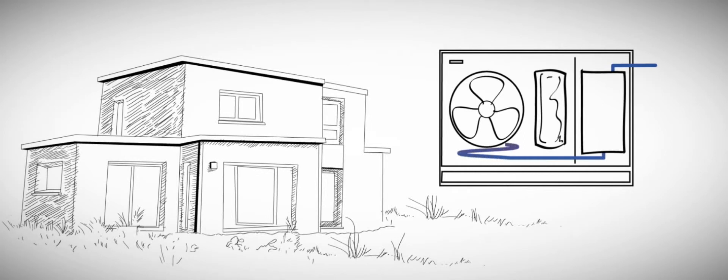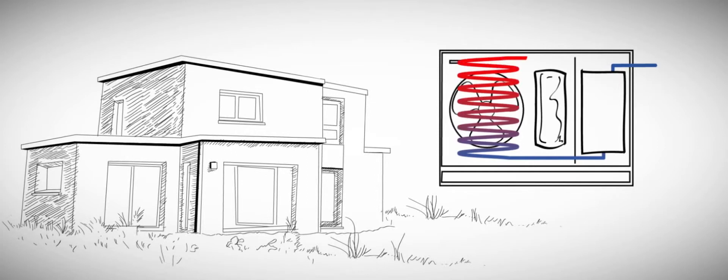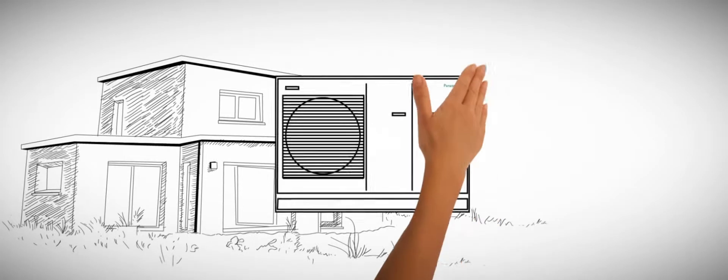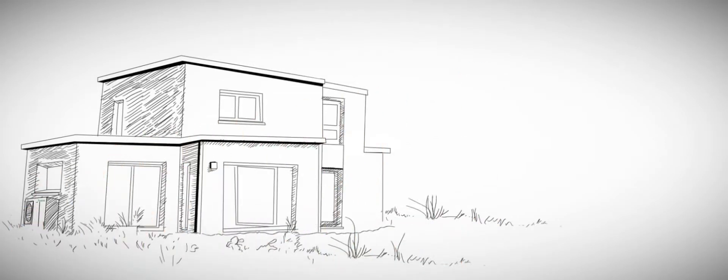Within the heat pump, air full of energy is pushed through the air heat exchanger by the fan. From there the energy is fed into a highly efficient compressor. Then this energy passes through the water heat exchanger which converts the energy into hot or cold water to heat or cool the home.